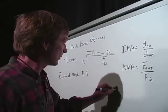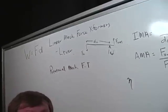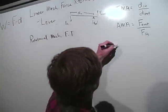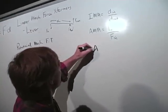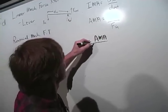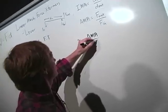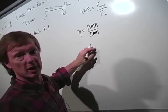The efficiency—see how this works—efficiency of a system is the actual mechanical advantage, which is always less than the ideal, divided by the ideal mechanical advantage. Or times 100% if you wish.